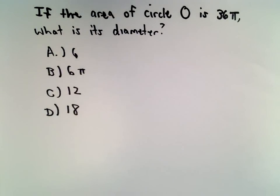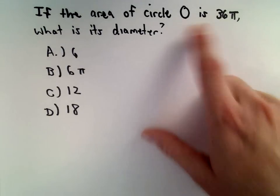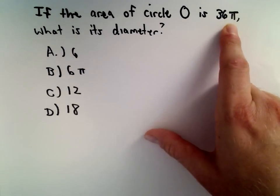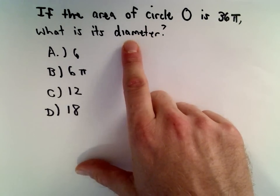Okay, in this problem we're given that the area of a circle O is 36π units. We want to know what's its diameter?